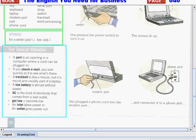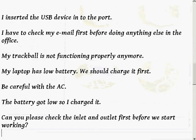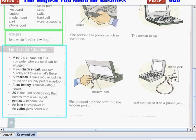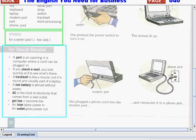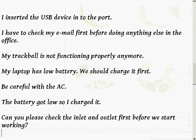AC is a kind of electricity that comes from a wall outlet — be careful with the AC. Get low means become low: the battery got low so I charged it. And an inlet takes power in, while an outlet gives power out. Can you please check the inlet and outlet first before we start working?